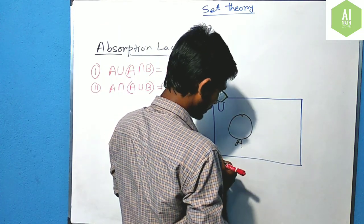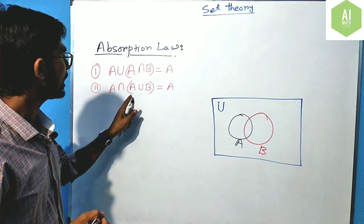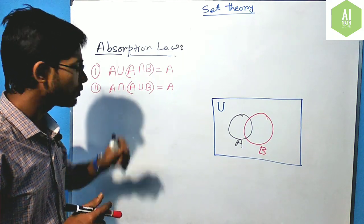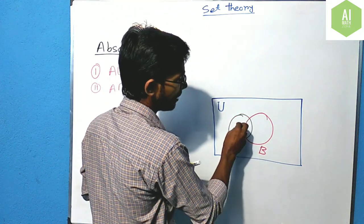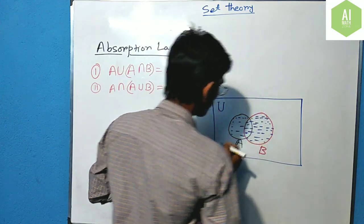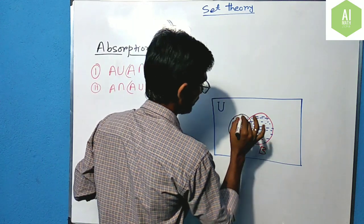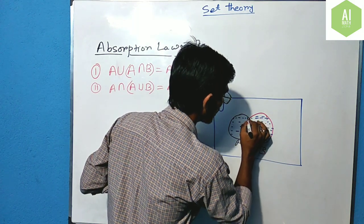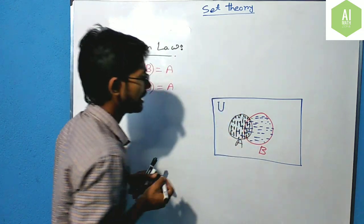Similarly, we will prove the second absorption law: A intersection (A union B) equals A. Any set A and set B are given. We take A union B — which means the whole part of A and the whole part of B. Then we denote set A with blue ink and A union B with another colour, and we find the intersection with A.